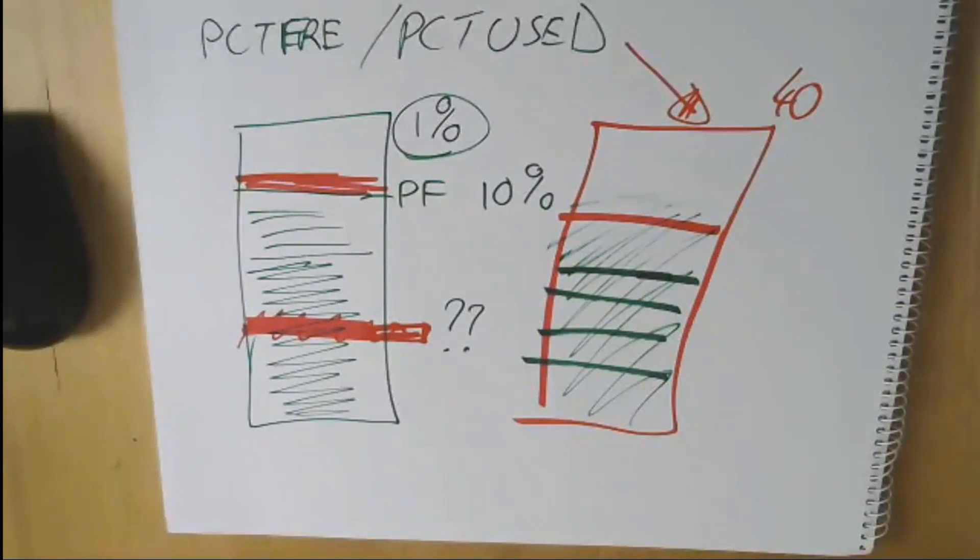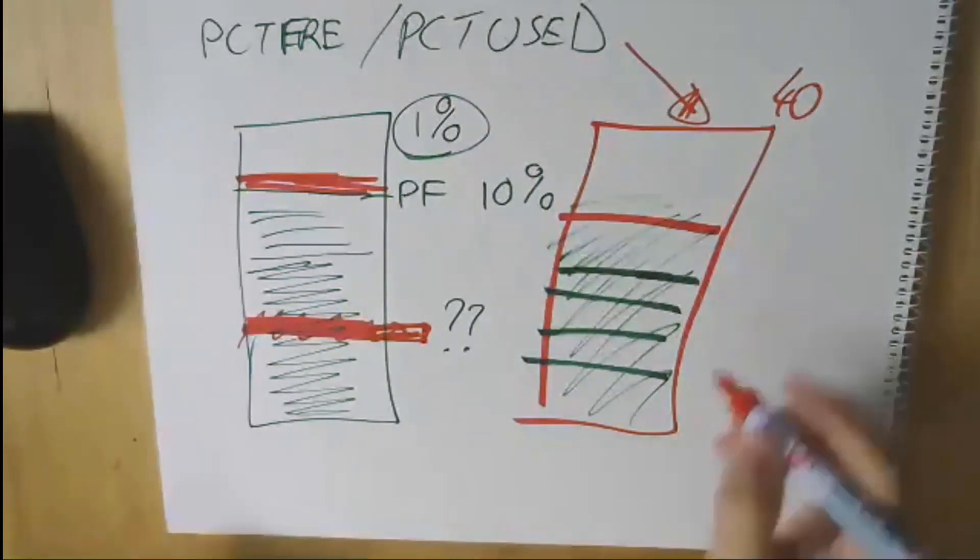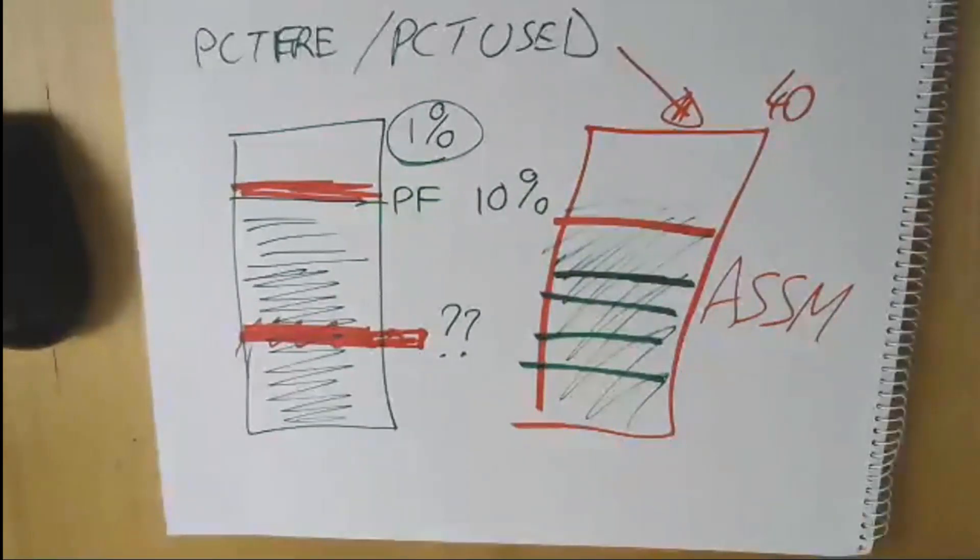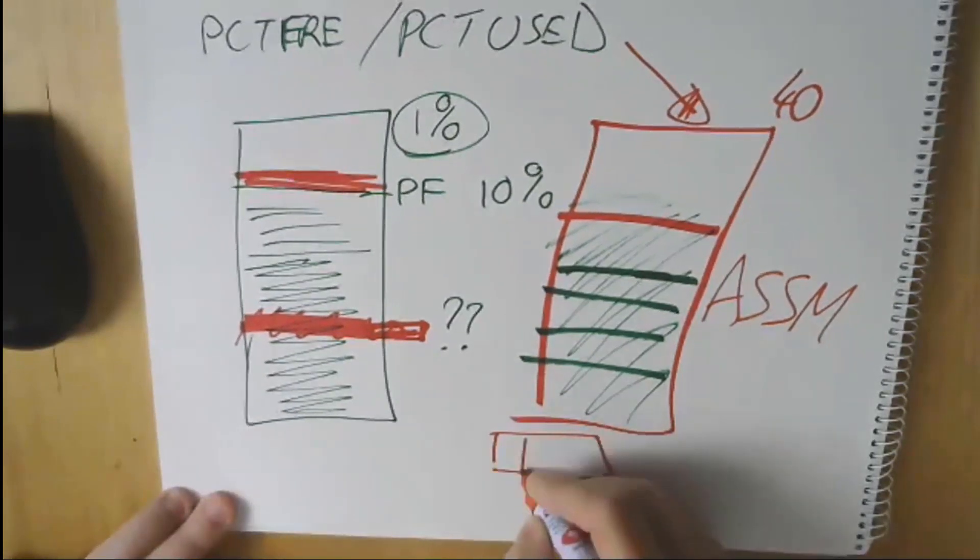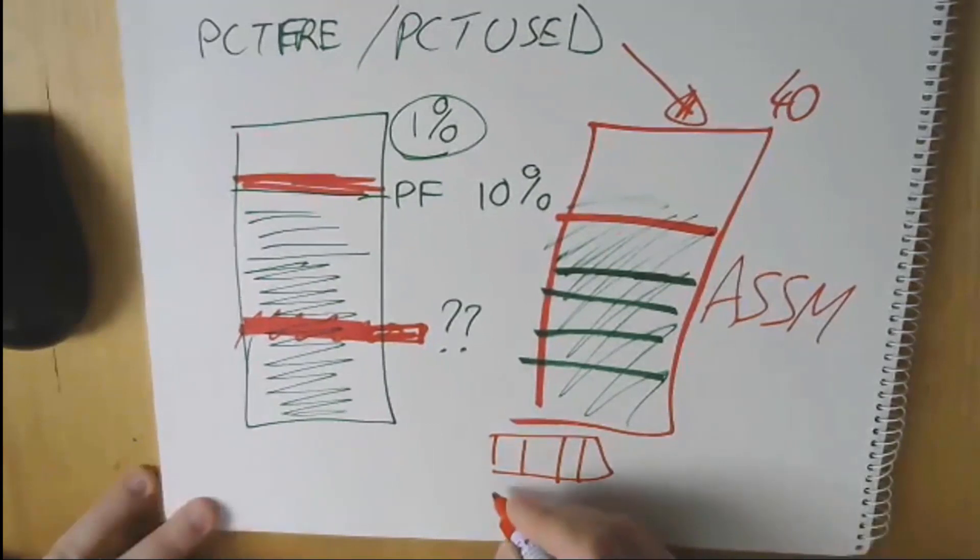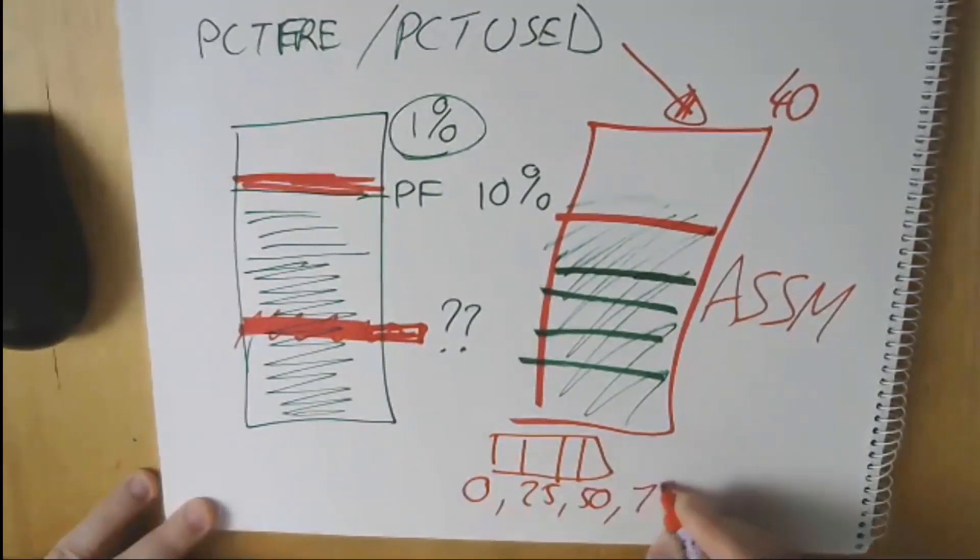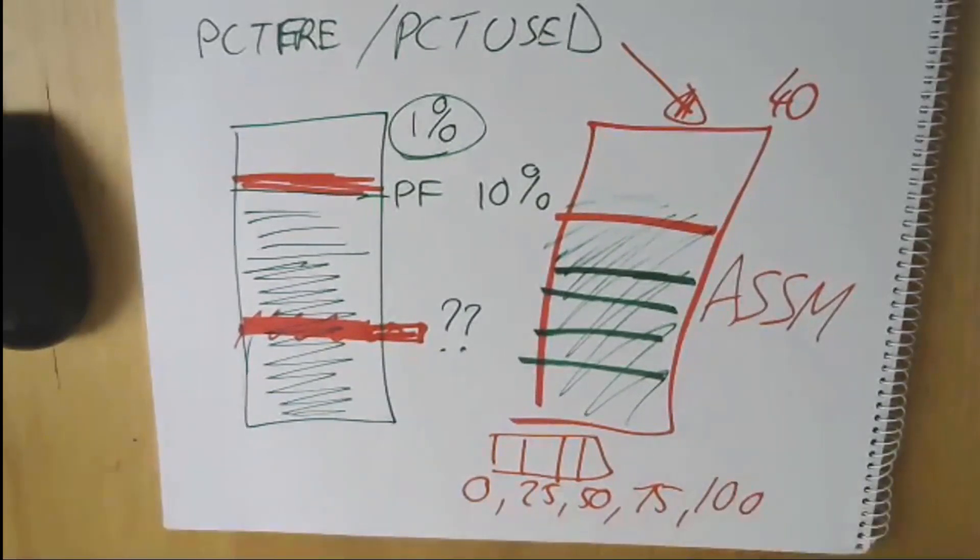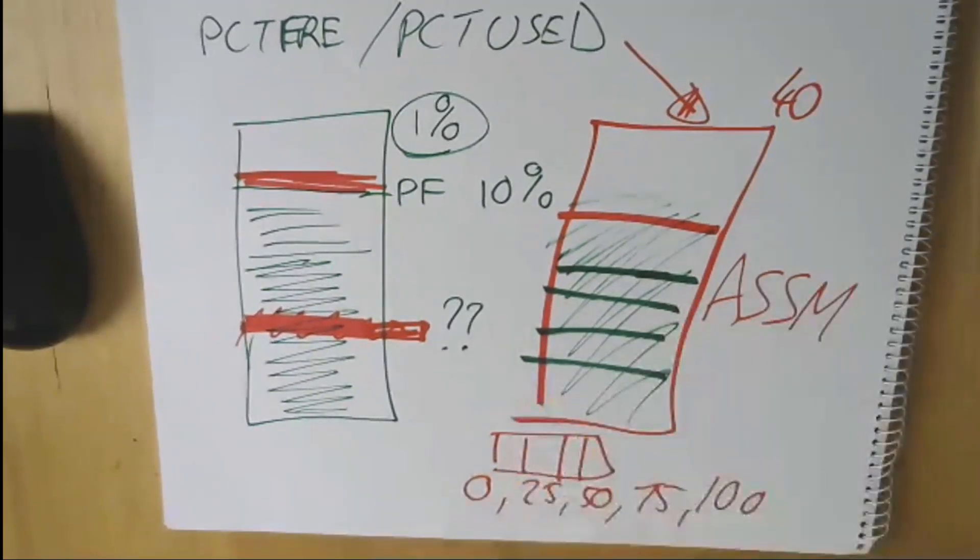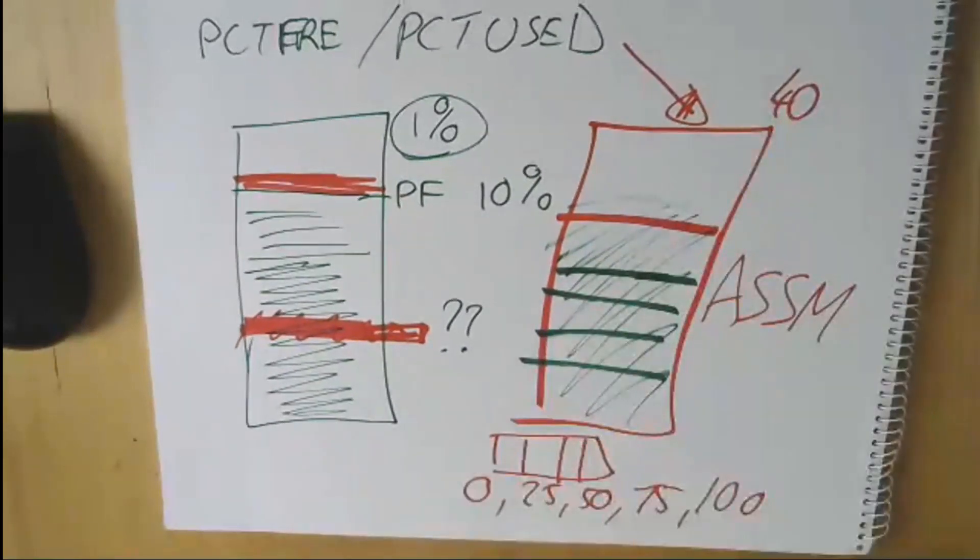I would generally almost ignore that nowadays. In terms of a setting we'd probably use, you can almost ignore it because with the advent of automatic segment space management, we now have bitmaps which represent the state of blocks. That bitmap maintenance is a very useful and efficient way of managing whether a block can be reused for its space. And the reason that is useful is when we get onto freelists. Percent used used to be a critical statistic to make sure your freelist management was under control.